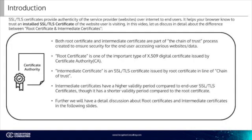A root certificate is one of the important types of X.509 digital certificates issued by the Certificate Authority, or CA. An intermediate certificate is an SSL/TLS certificate issued by root certificates in the chain of trust. Intermediate certificates have a higher validity period compared to end user SSL/TLS certificates, though a shorter validity period compared to root certificates.